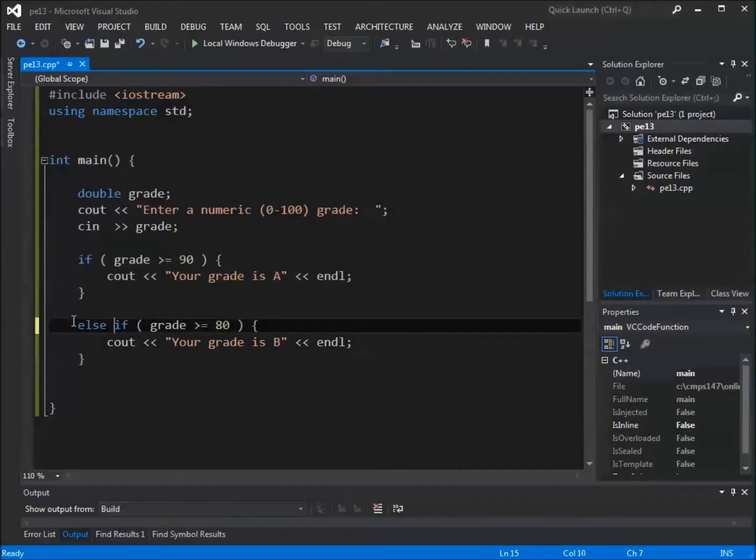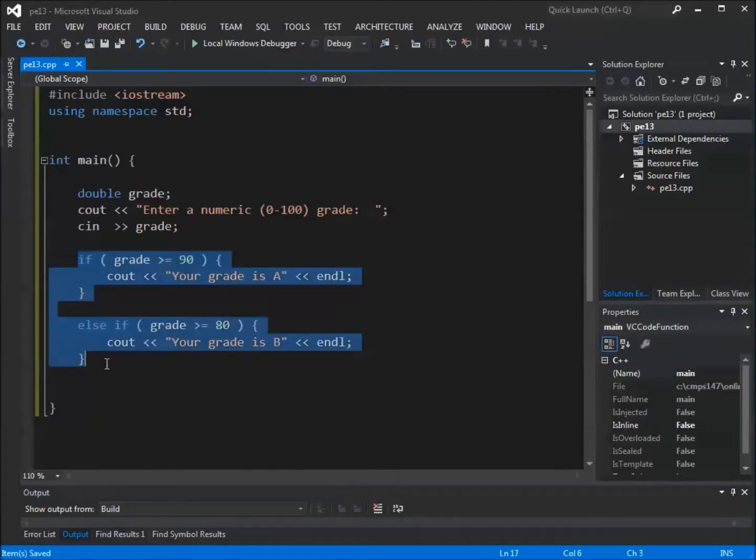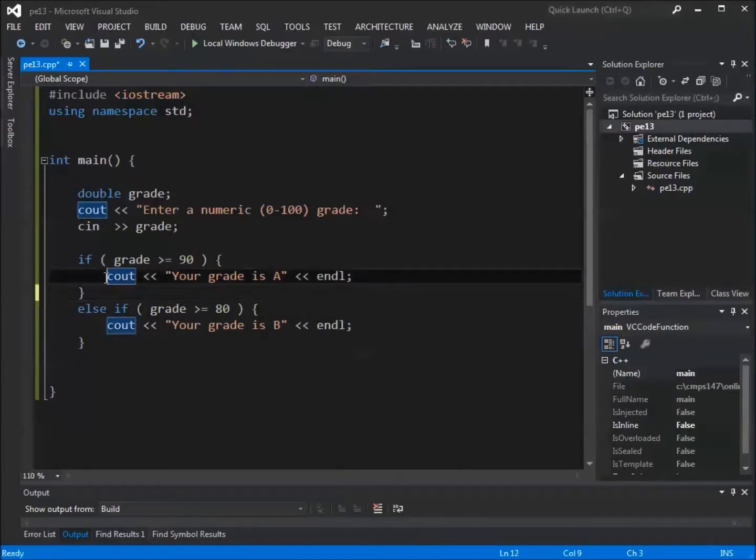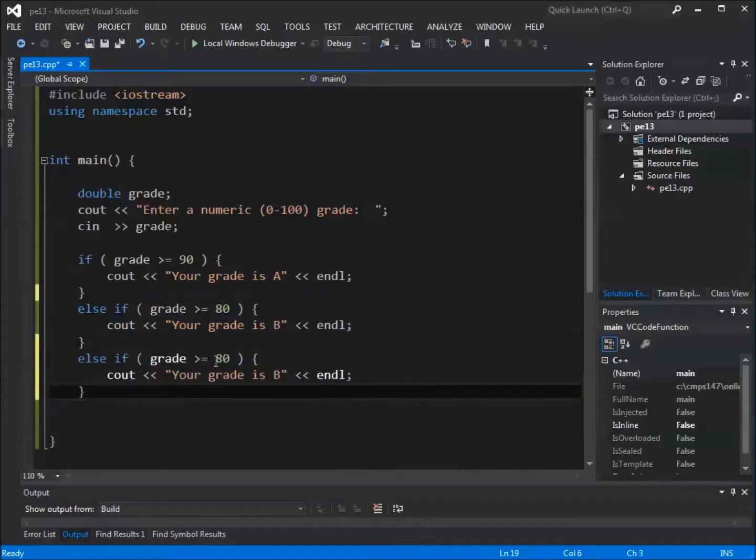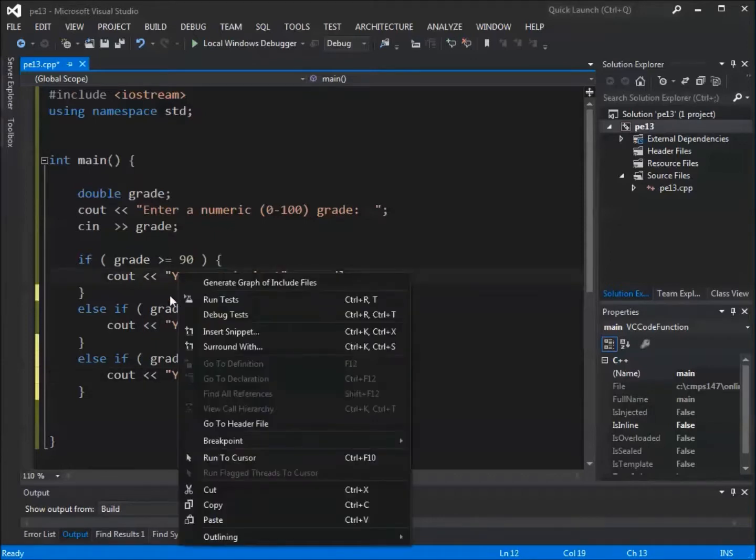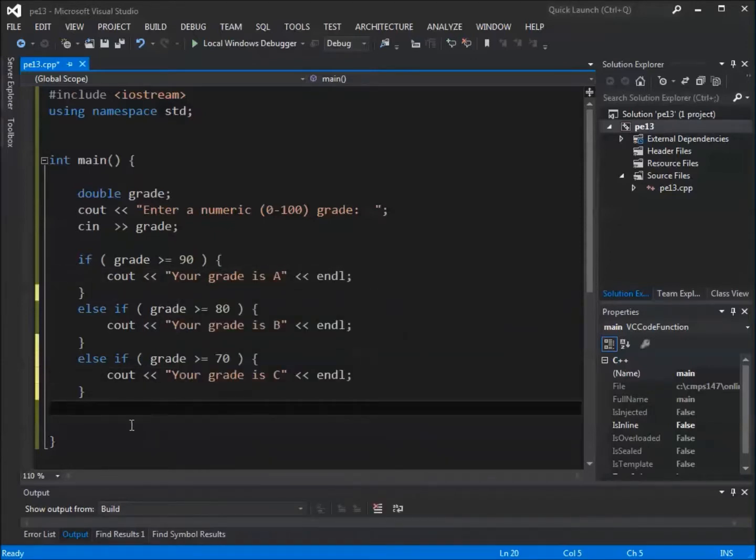That's what the else if clause is really all about. The else if clause will create a dependency between these. These if statements really go together. As soon as grade is greater than 90 and this executes, all the rest of the else ifs attached to that if statement are ignored. Similarly, if I've got grade is greater than or equal to 70, as soon as I pass the test on 80, like if the user types in 86, this will be skipped. If the user types in 92, the rest of all the else if statements will be skipped.